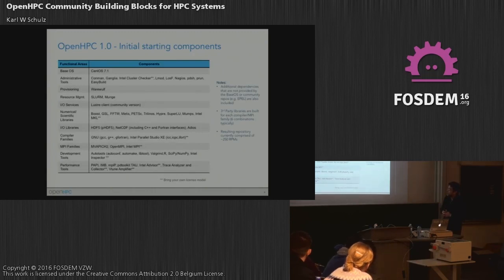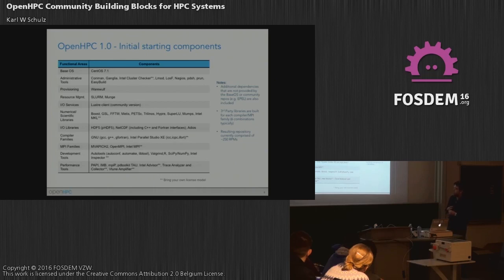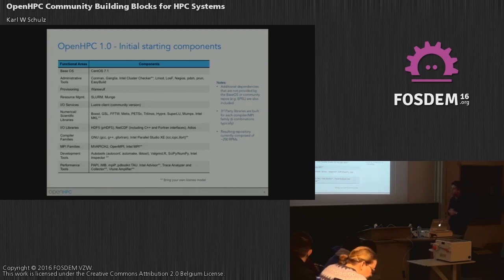Here is a snapshot of what's in OpenHPC 1.0. We're providing binary builds — really a repository. You install your base OS, enable a repository, and then you have access to all of these packages. When we released it, CentOS 7.1 was out, so that's where the builds are targeted. Red Hat and CentOS are reasonably prevalent in the U.S. from an HPC perspective. We group all packages into different functional areas: administrative tools, provisioning, resource management.